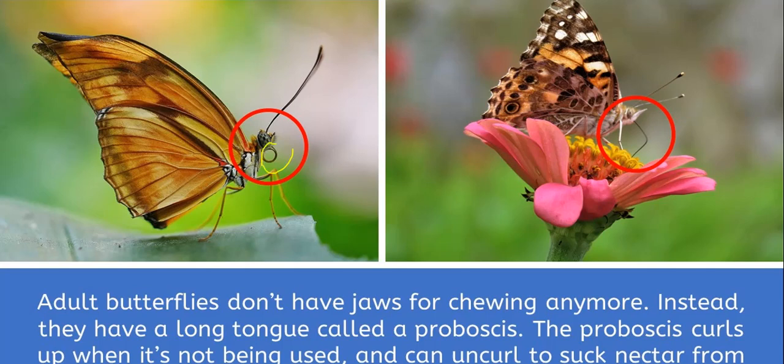The tongue is used kind of like a straw in the flower, which sucks up nectar from inside the flowers. That is called a proboscis — they basically use it as a straw to suck up nectar so they can eat their food.